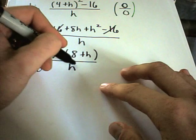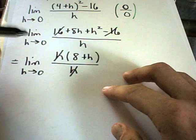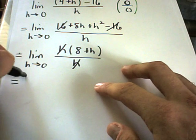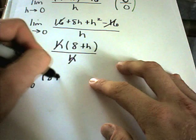Now I can cancel out my h's. And this h in the bottom is what's certainly giving me some problems anyway, because I'm dividing by 0. So I'm left with the limit as h approaches 0 of 8 plus h.